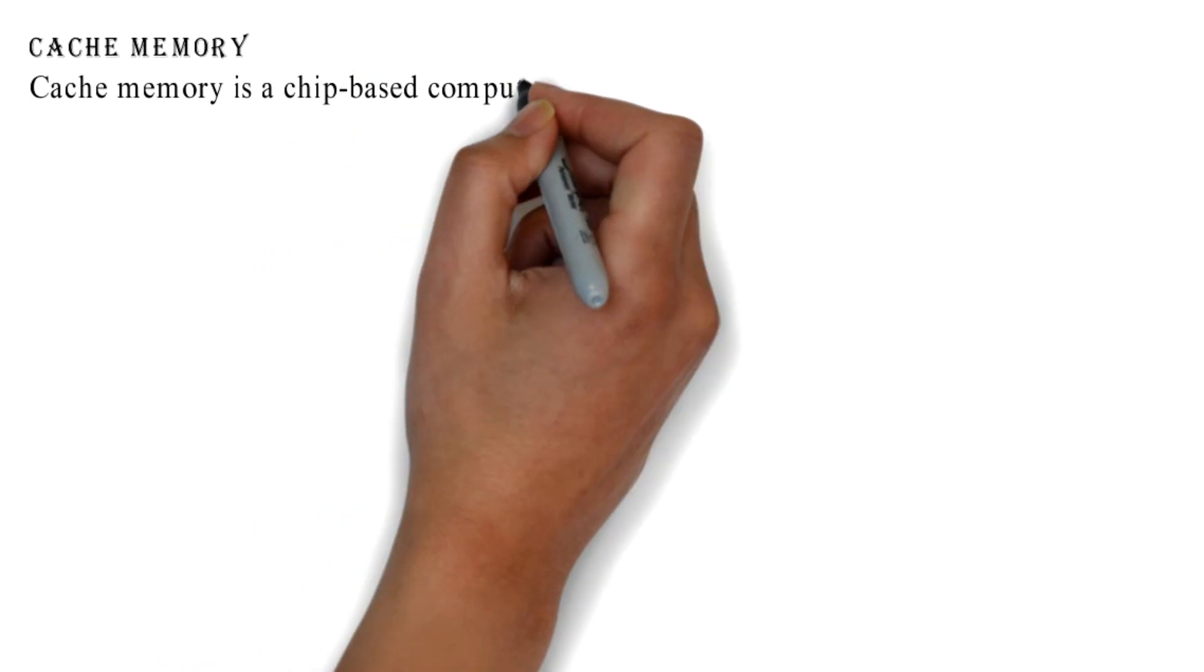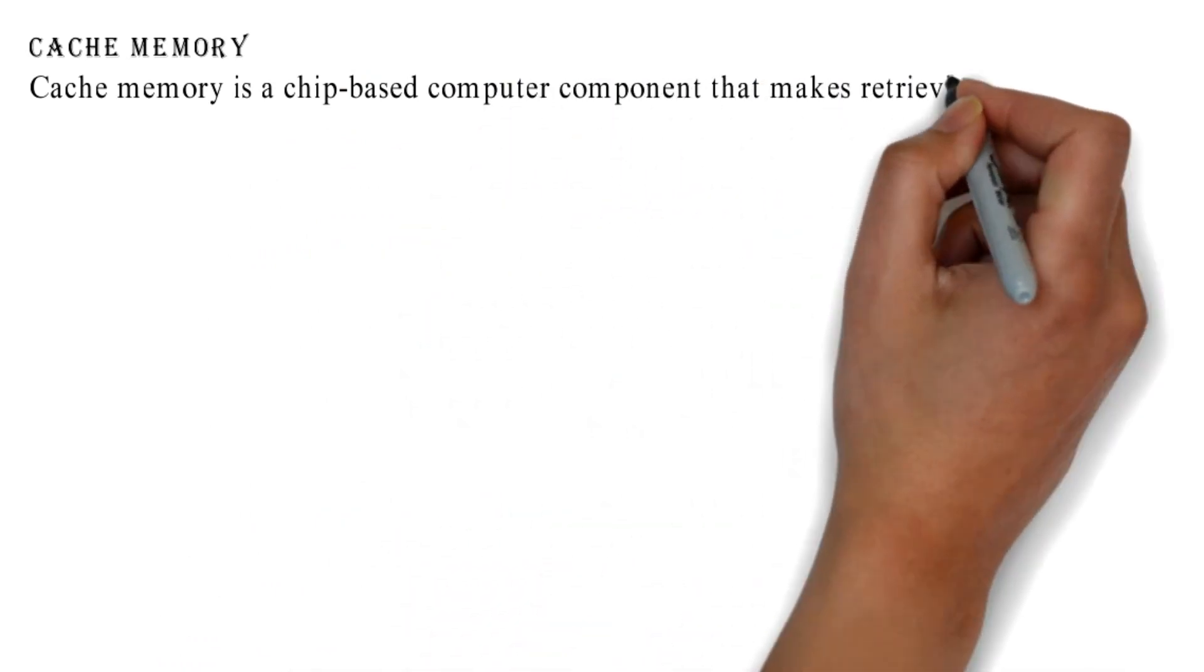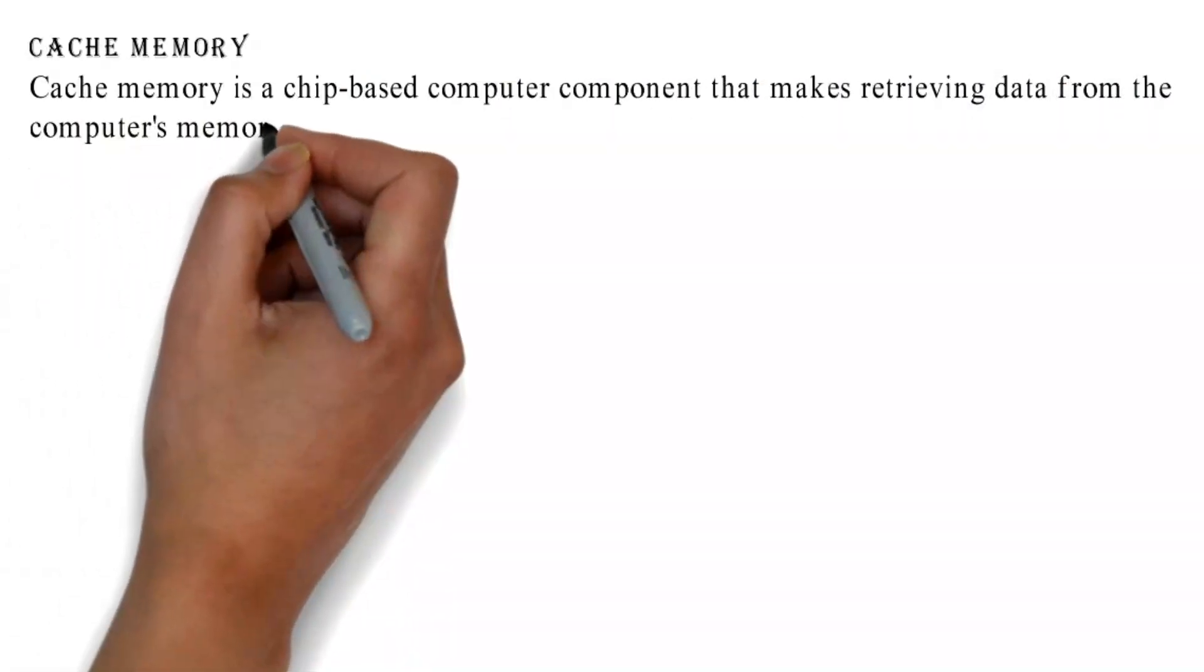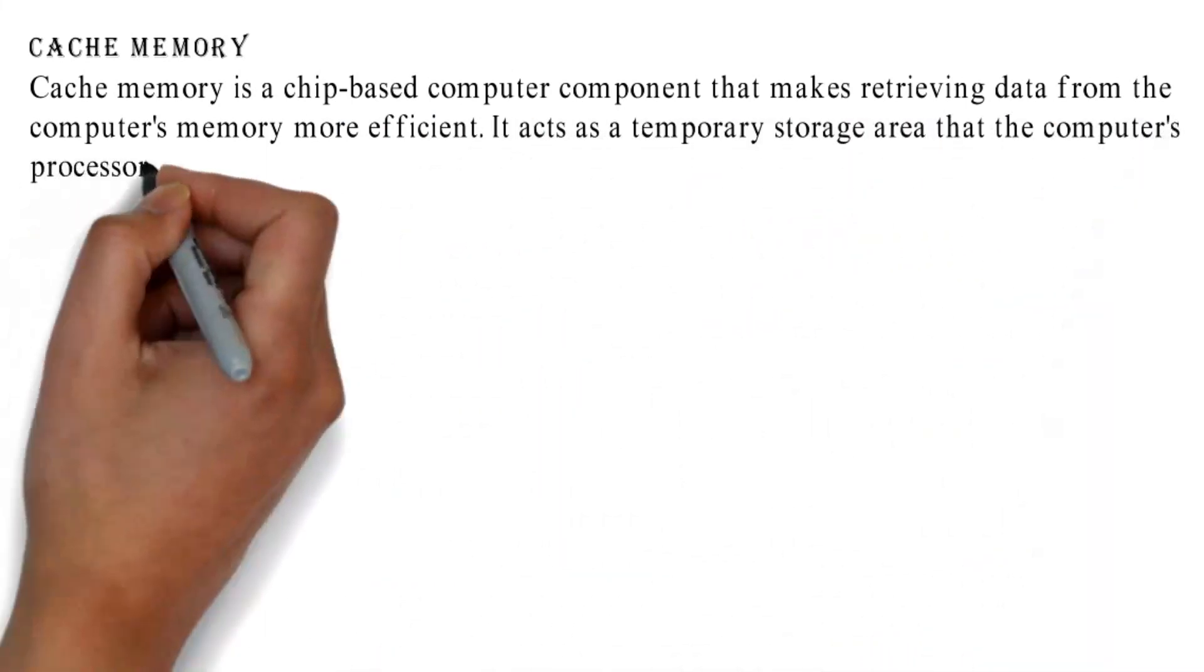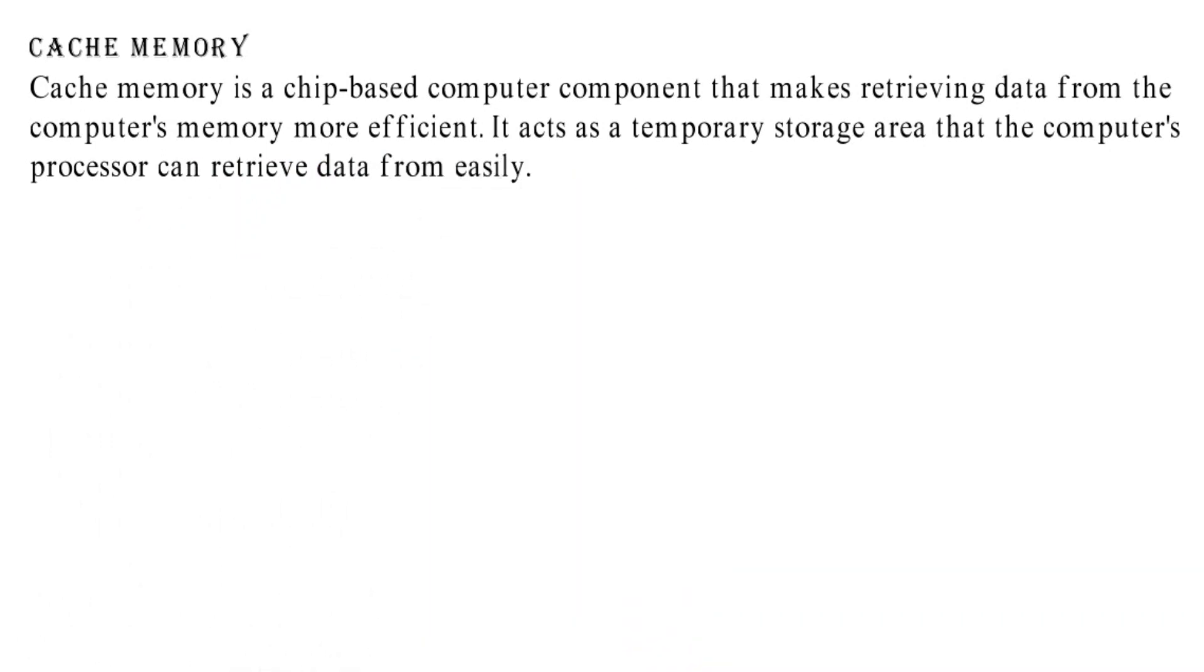Cache memory is a chip-based computer component that makes retrieving data from the computer's memory more efficient. It acts as a temporary storage area that the computer's processor can retrieve data from easily.